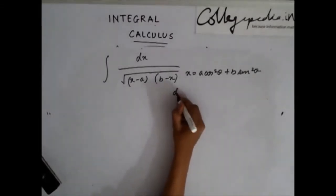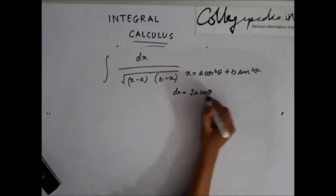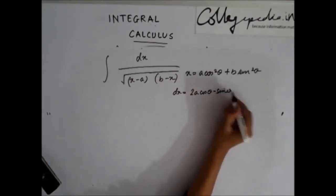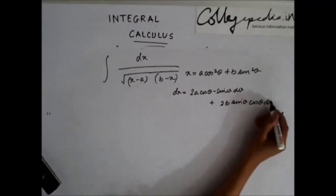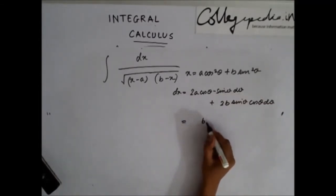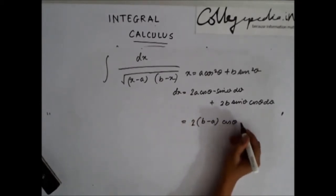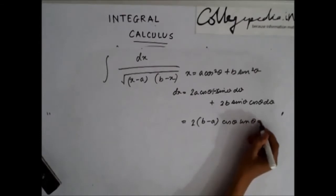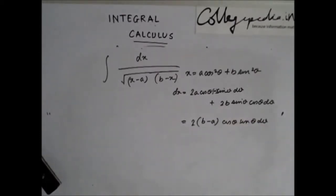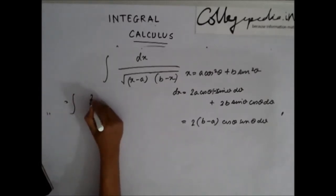With x = a cos²θ + b sin²θ, dx can be written as 2a cosθ(−sinθ)dθ + 2b sinθ cosθ dθ, which simplifies to (b − a) · 2 cosθ sinθ dθ.